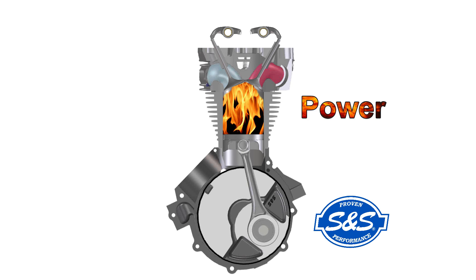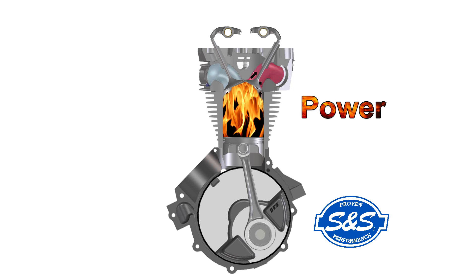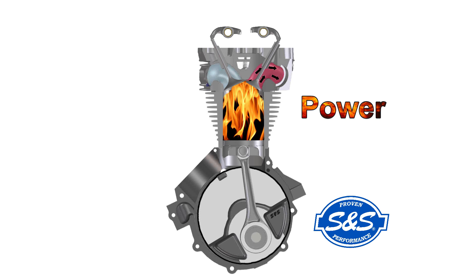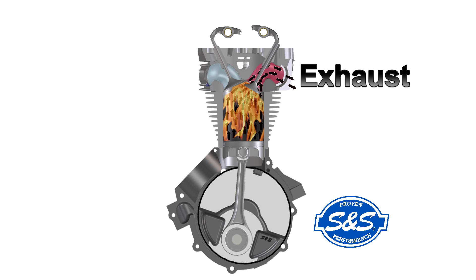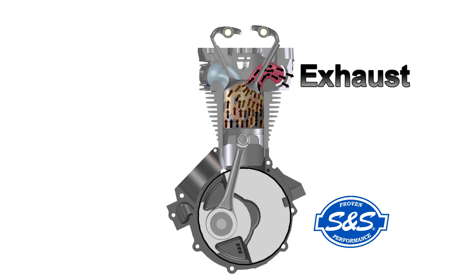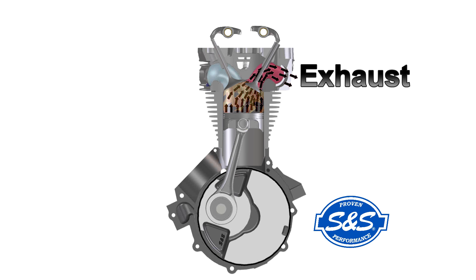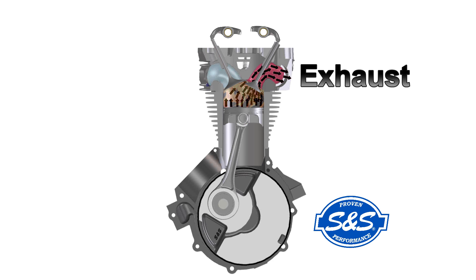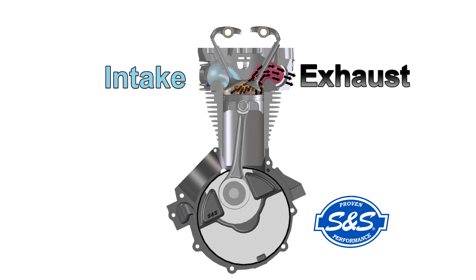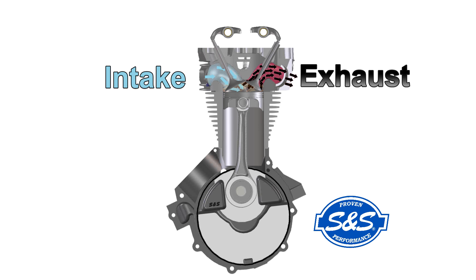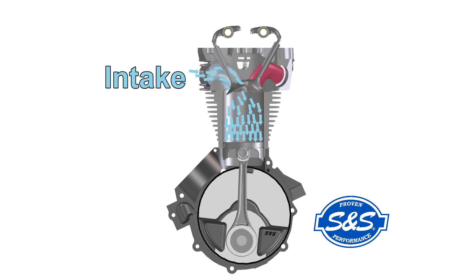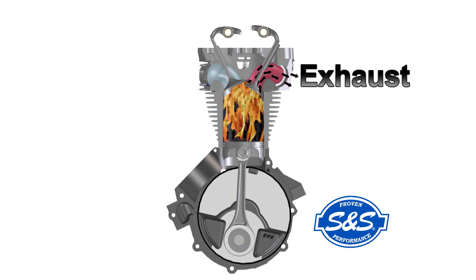Somewhat before the piston reaches bottom dead center, the exhaust valve starts to open and the remaining cylinder pressure starts to push the burned exhaust gases out into the exhaust system. Once the piston passes bottom dead center, the exhaust valve is fully open and exhaust gases are forced out of the exhaust port as the piston travels upward. Slightly before the piston reaches the top of its travel in the exhaust stroke, the intake valve begins to open — so both valves are open at the same time. This is called overlap. The piston then starts to travel down the cylinder again, the exhaust valve closes, and the whole cycle starts over.